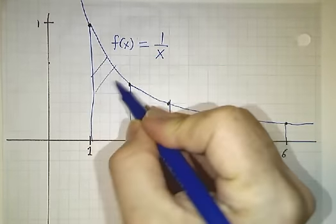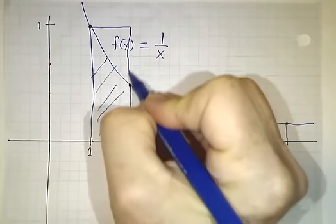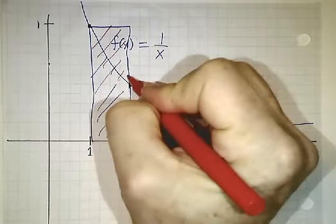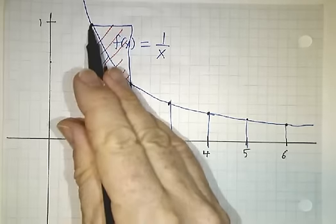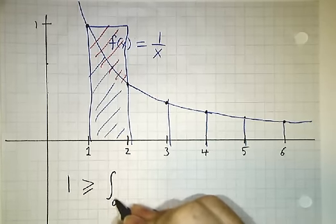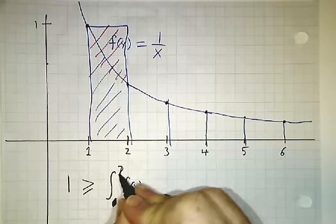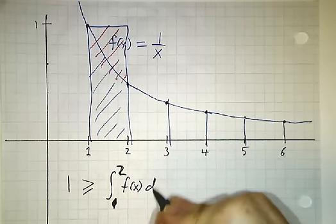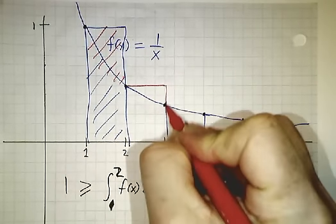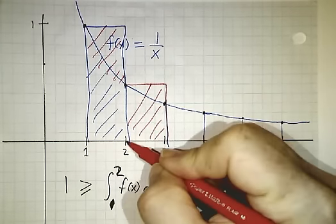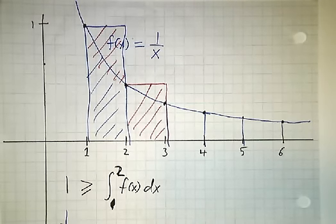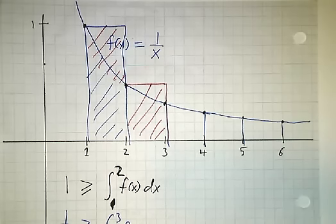We know that the area under this piece is less than the area of this rectangle. The area of that rectangle is 1. So we know that 1 is greater than or equal to the integral from 1 to 2 of f dx. Then the area of the next rectangle is f of 2, which is 1/2. So 1/2 is greater than or equal to the integral from 2 to 3 of f dx.